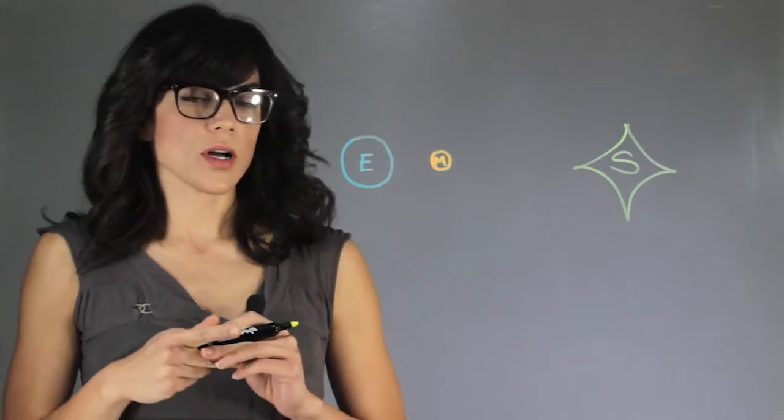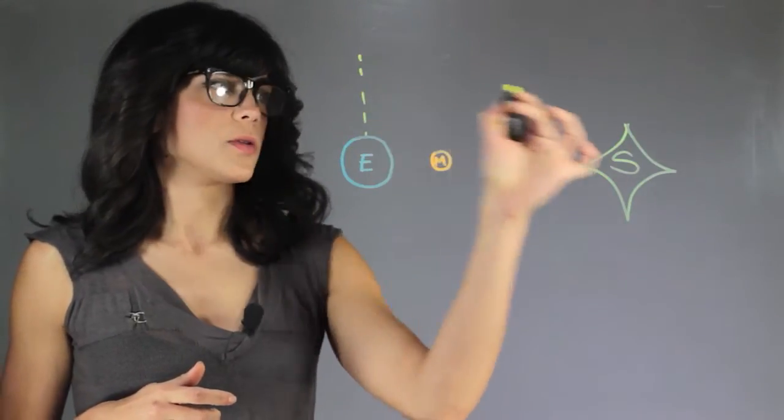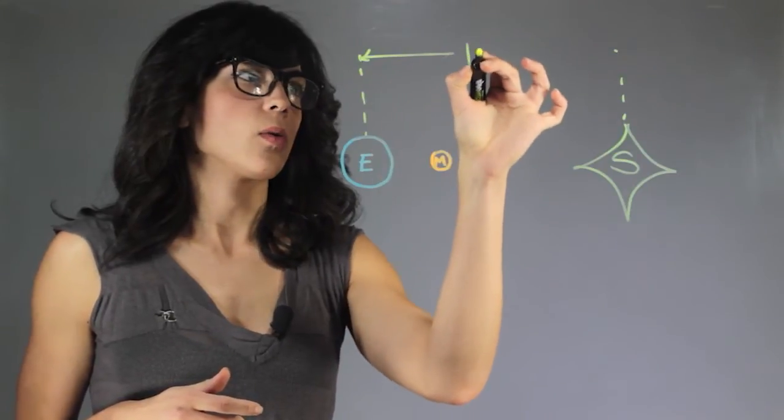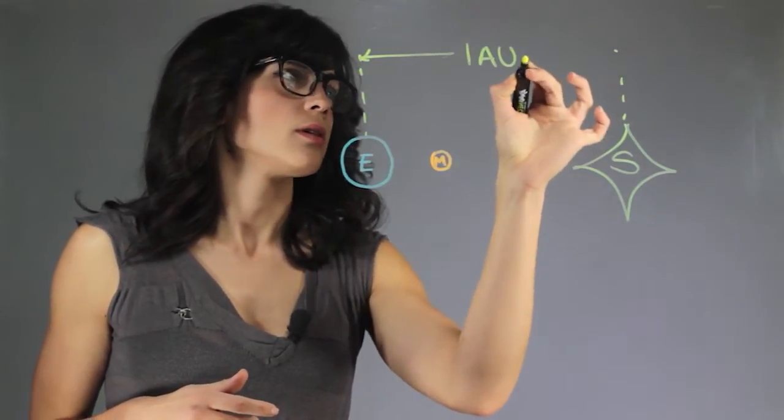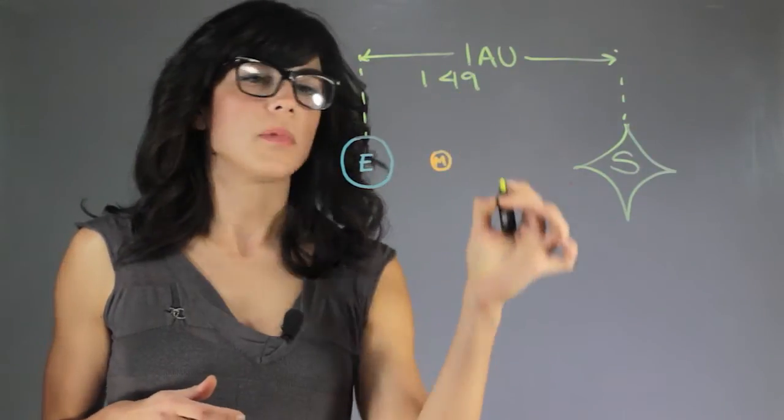So first let's talk about the distances. A very famous distance is the distance between the Earth and the Sun and this is called one astronomical unit and is 149 million kilometers.